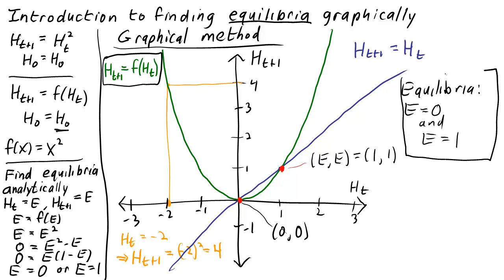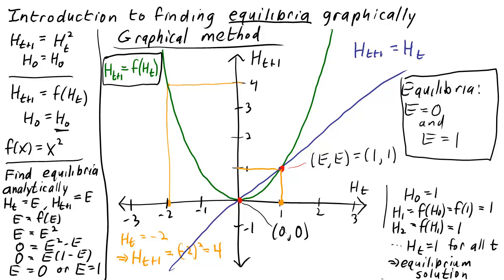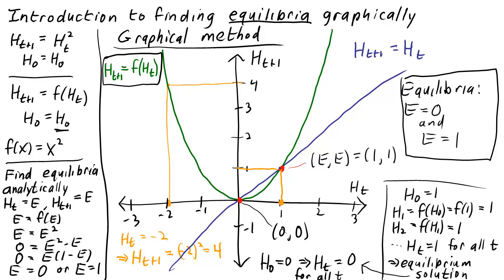Given the graph of f, we don't even need its formula to determine the equilibria. Let's say we started with the initial condition h₀ = 1. To find h₁, we look up the value of the function above 1. We see that f takes on the value 1, so h₁ = f(h₀) = f(1) = 1. If we repeated this process to find h₂ = f(h₁), we would again find h₂ = 1. The dynamical system stays at h_t = 1 forever — we have found an equilibrium. The same reasoning applies if we started with h₀ = 0, giving the solution h_t = 0, another equilibrium. Given the graph of f along with the diagonal, it is a simple process to read off the equilibria of the discrete dynamical system.